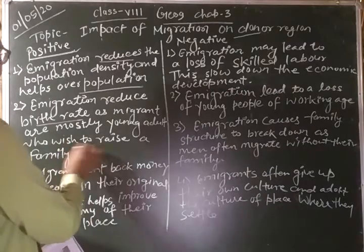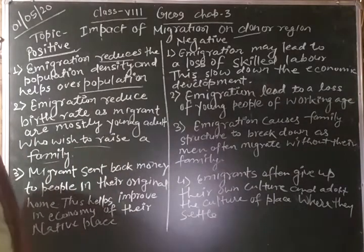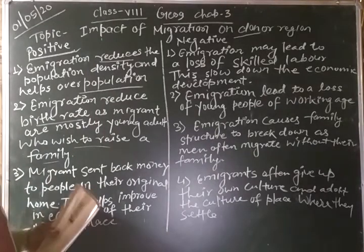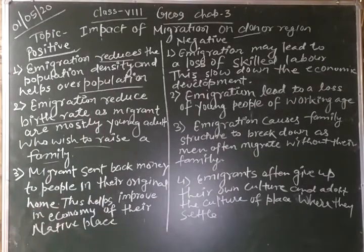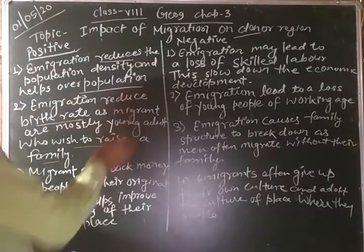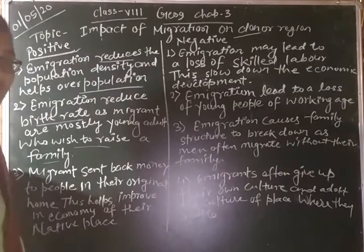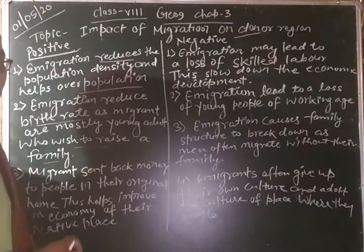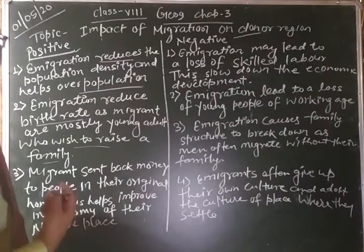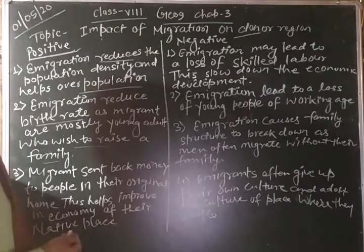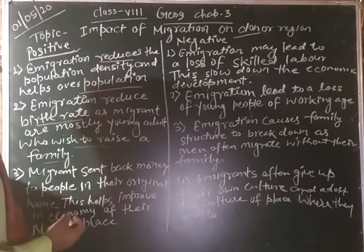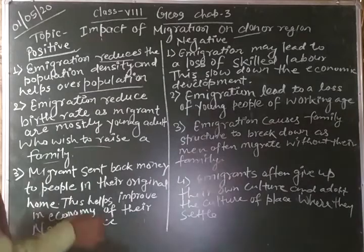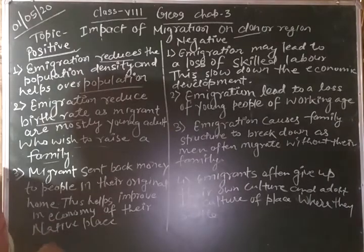Immigration also reduces the birth rate, as migrants are mostly young adults who wish to raise a family. Due to immigration, the birth rate is reduced, because the young people who could increase the birth rate go to another country.